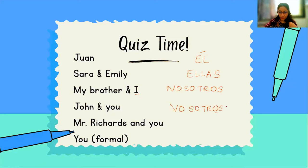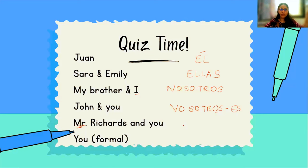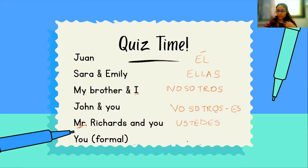'John and you' — these are my friends, so it's an informal conversation. John and you becomes 'you all.' Assuming they're both guys or a mixed group, it's 'vosotros' in Spain. Outside of Spain, use 'ustedes.' For 'Mr. Richards and you' — the title itself tells us this is formal. These could be my professors. I can't say 'vosotros'; I am going to say 'ustedes.' And the last one: talking to my mother's friend — she is elder, so I use 'usted,' not 'tú.'